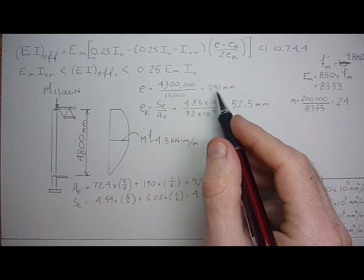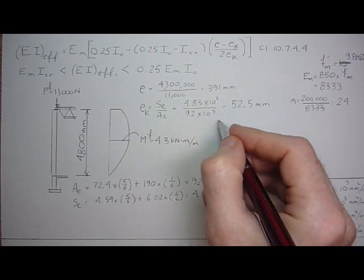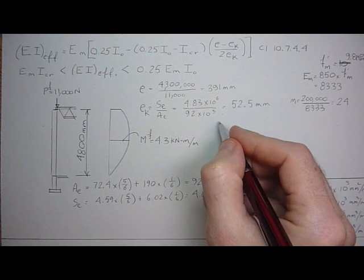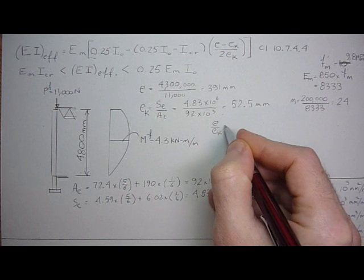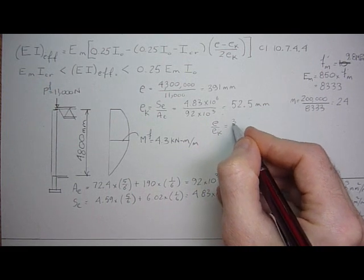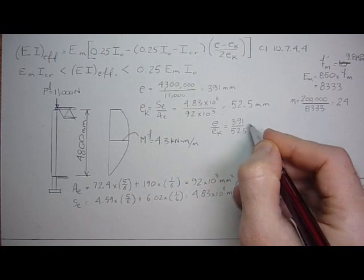And when we compare EK to E, we see that the eccentricity is much higher in comparison to the cracking. How much higher? We could take a ratio, E over EK. That's going to be 391 over 52.5.